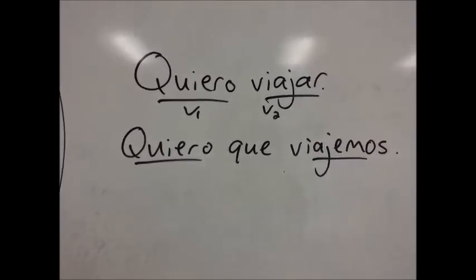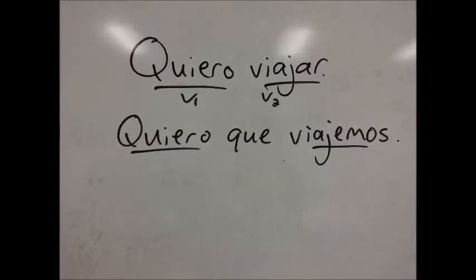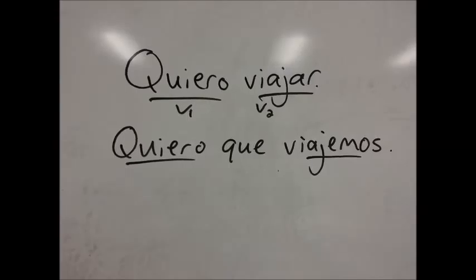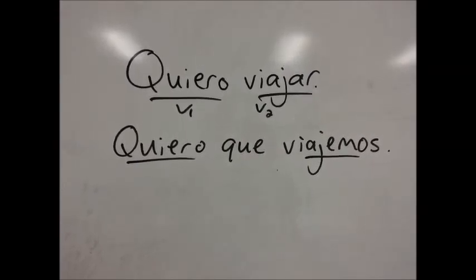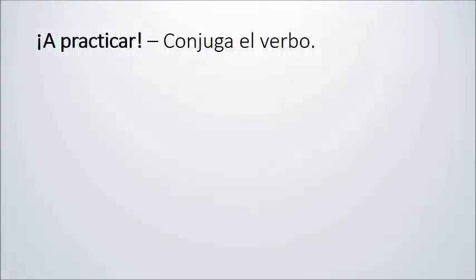The verb querer is a type 3 verb, which means it's a G1 because it expresses desire. In the first sentence we have quiero viajar, I want to travel. The subject in both verbs is yo, so the second verb stays in the infinitive. Versus quiero que viajemos is I want us to travel. The first part is yo, but the second part is nosotros. So viajemos needs to be conjugated in the subjunctive.